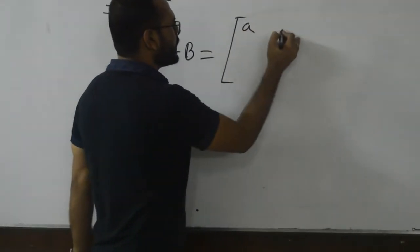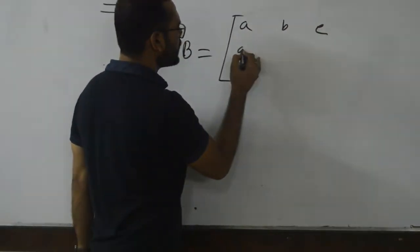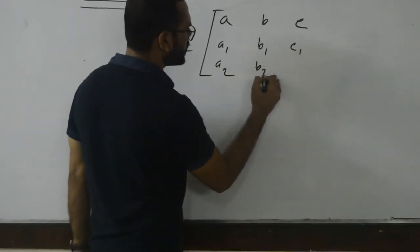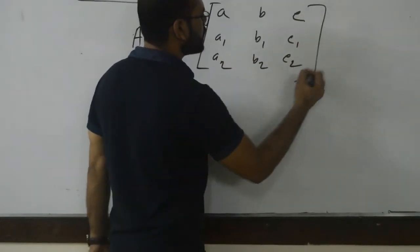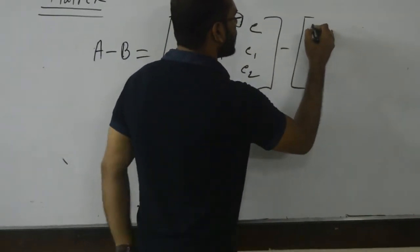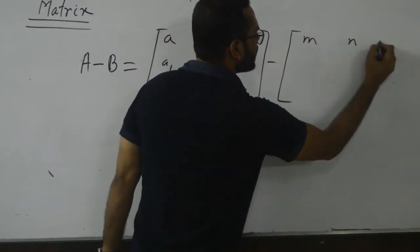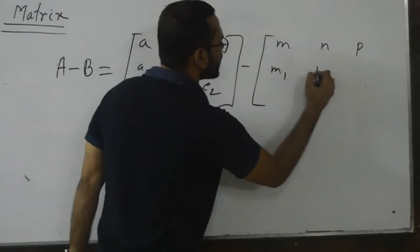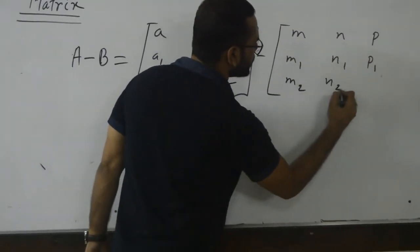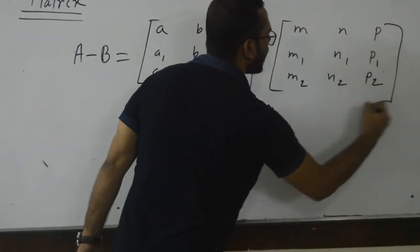Here, matrix A: a, b, c, a1, b1, c1, a2, b2, c2. And then minus sign, minus. Matrix B: m, n, p, m1, n1, p1, m2, n2, p2.